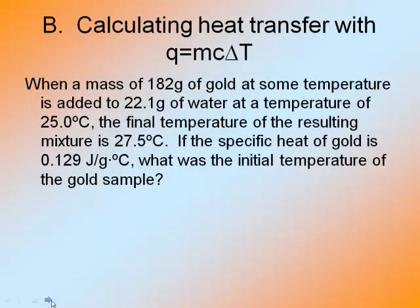Let's see another one. It says same kind of problem. I'm taking a piece of gold. Mass of gold is 182 grams at some temperature. It's added to 22.1 grams of water at a temperature of 25 degrees Celsius. The final temperature of the resulting mixture is 27.5 degrees Celsius. If the specific heat of gold is 0.129, what was the initial temperature of the gold sample?